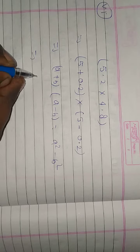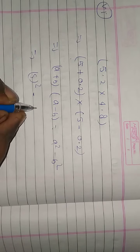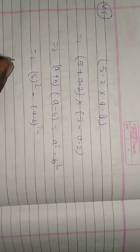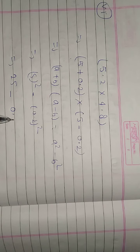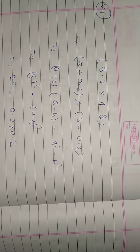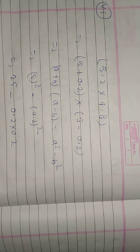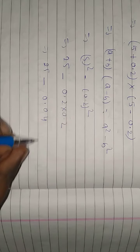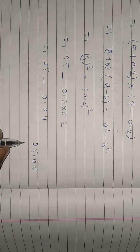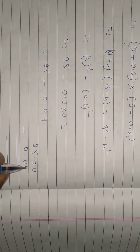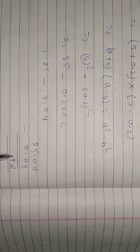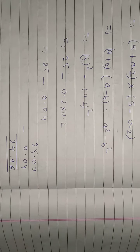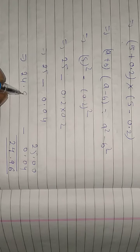So here 5 square minus 0.2 square. 5 square is 25, and 0.2 × 0.2 is 0.04. It means 25 minus 0.04. Subtracting: 25 minus 0.04 gives 24.96.